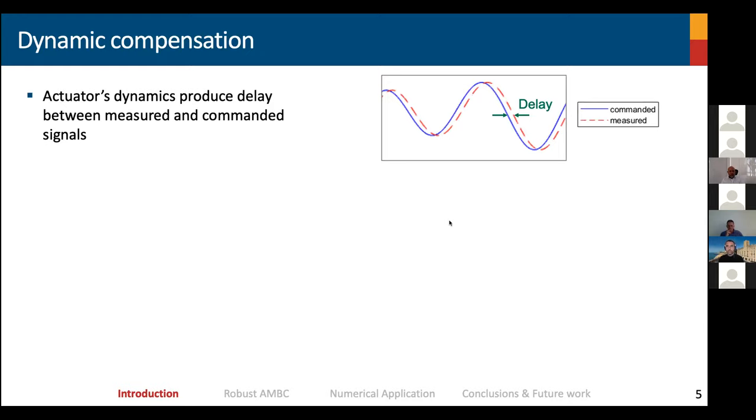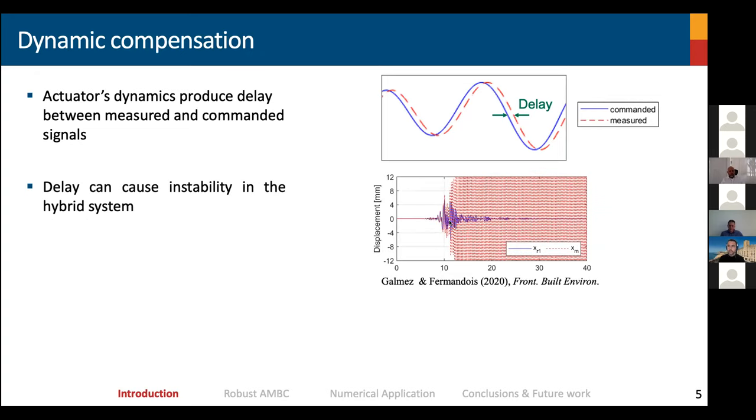The other challenge that arises when we want to conduct real-time hybrid simulation is the fact that the loading equipment actuators have their own intrinsic dynamics. Because of those dynamics, there is a delay between the command signal that we want to impose over our specimen and the measured signal from the specimen. This delay can cause instability in the hybrid system when we're conducting the integration, and this could render the test unreliable. And more importantly, we can damage not only the specimen prematurely, but also we can induce damage into our experimental equipment, and that is very bad.